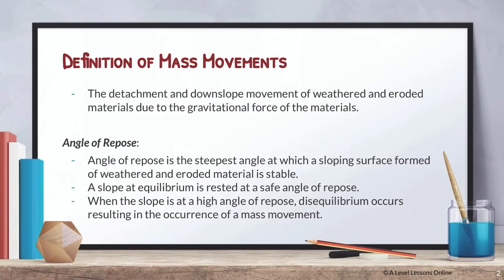Mass movement is defined as the detachment and downslope movement of weathered and eroded materials due to the gravitational force of the materials themselves. This can be caused by internal or external factors, which we'll cover in the next video.